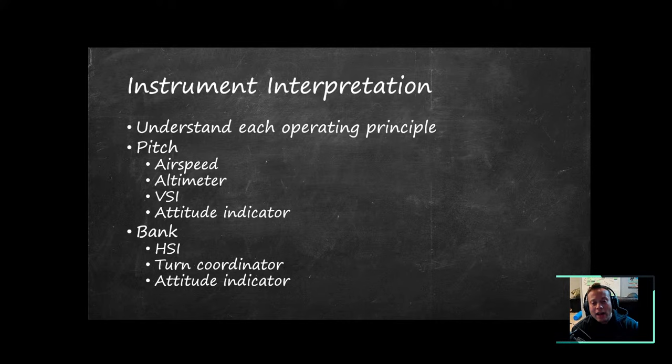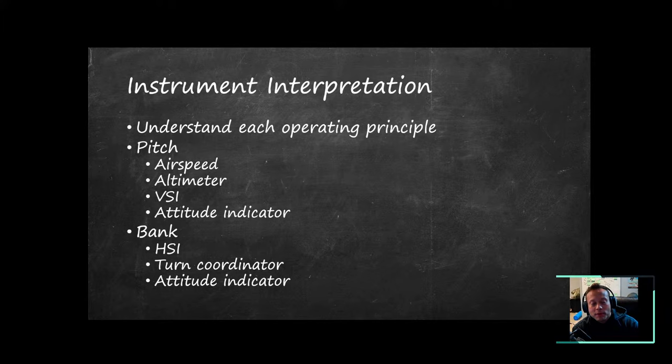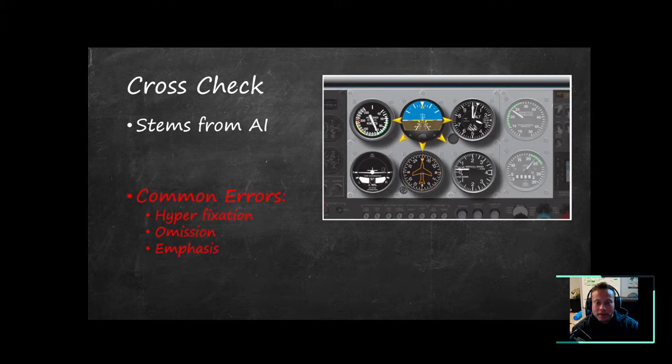Let's talk about instrument interpretation. We have to understand how each instrument works. We covered the basic principles of the pitot-static system and the gyroscopic principles last week. The pitch instruments are your airspeed indicator, altimeter, VSI, and attitude indicator. Your attitude indicator gives you pitch relative to the horizon. If you pitch up, you will slow down; if you pitch down, you will speed up. If you're nose high, you're likely to climb and will have a positive vertical speed.